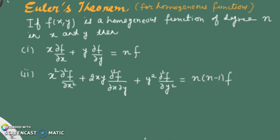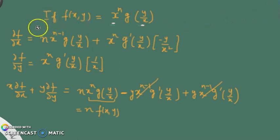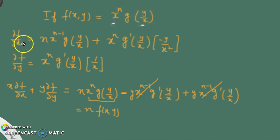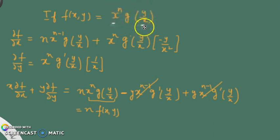We are going to study how we can apply these results in problem solving, but first let me quickly show how this result is established. We take the function f(x,y) = x^n · g(y/x). We find the partial derivative of f with respect to x. Since x^n contains x and g also contains x, we apply the product rule.